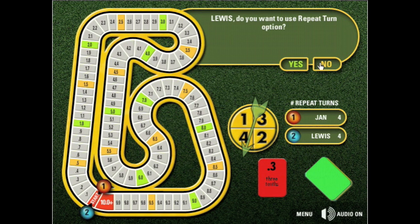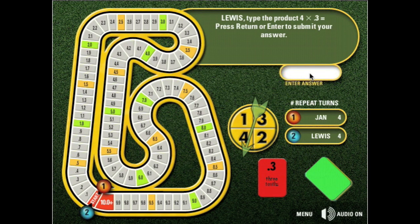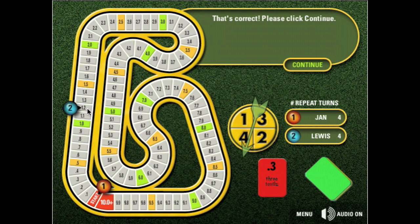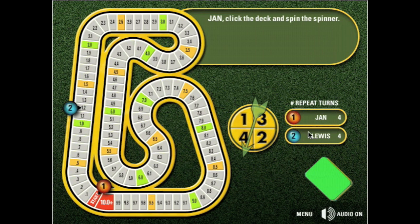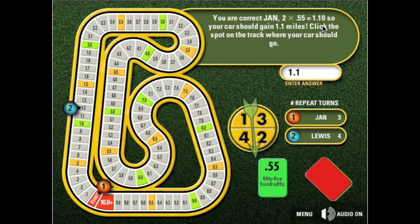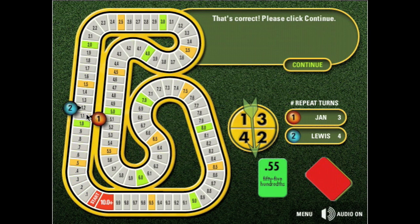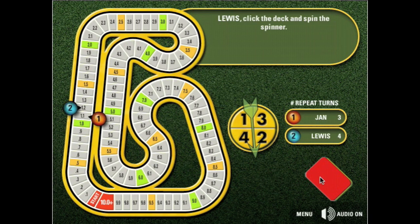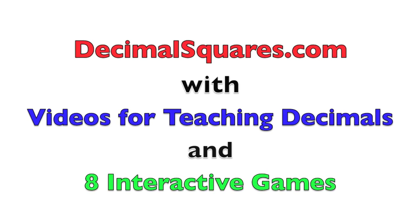Good job! Now it's Jan's turn. She turns over her card and spins a spinner. Now she multiplies 2 times .55. That's the correct product. So she advances her card to the 1.1 mark, just a little bit behind Lewis.